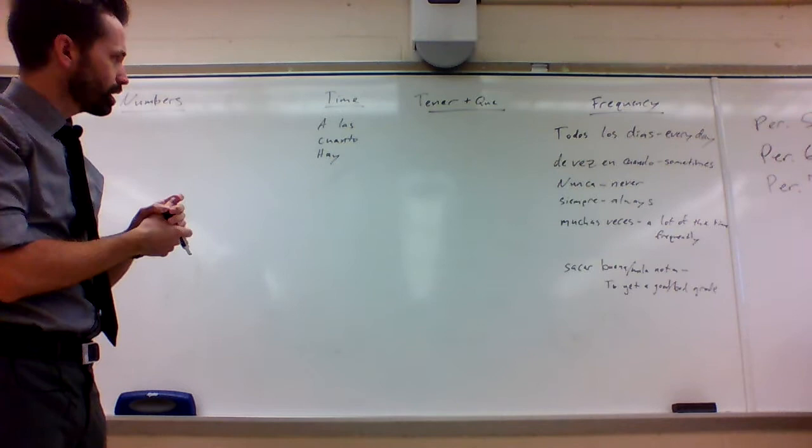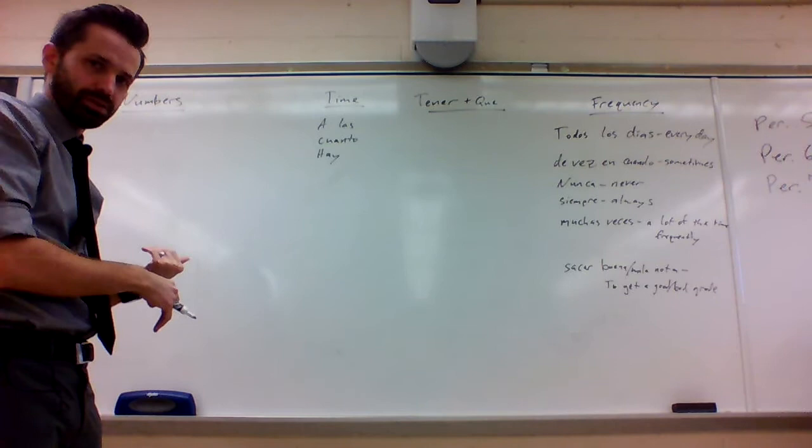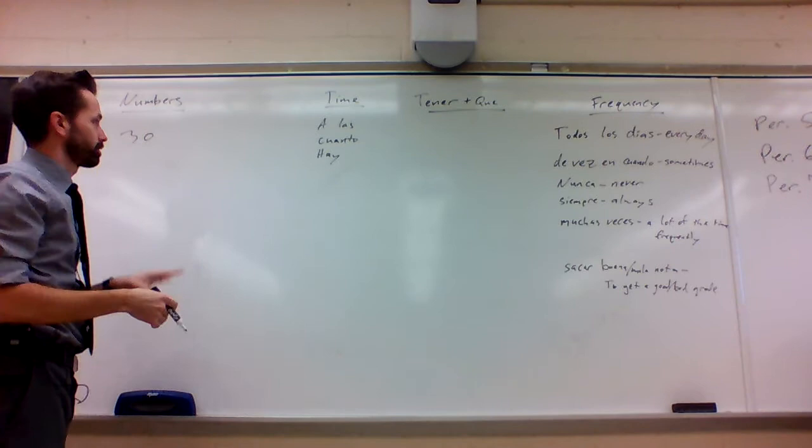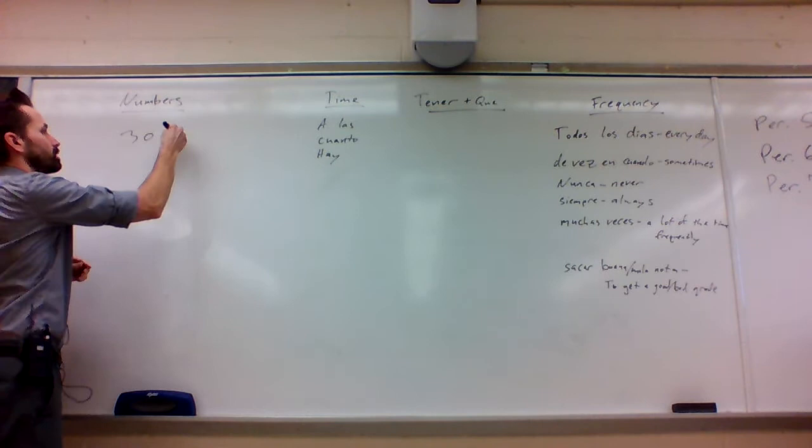There's a couple different ways that you have to do the numbers, so I'm gonna start with the easiest one and work our way back down to the harder ones. The harder ones are the lower numbers, but we'll start with the easiest ones. So starting at 30 and all the way up to 99 follows the same pattern and it's the easiest one, so I'll show you that one.